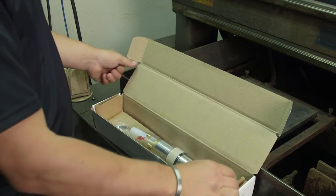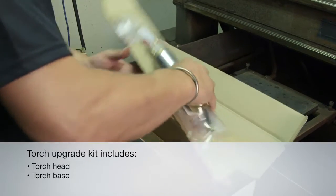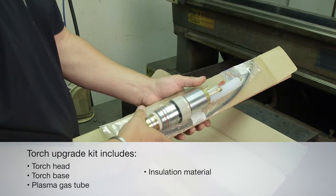A torch upgrade kit includes a torch head, a torch base, a plasma gas tube, insulation material, and a field service bulletin.